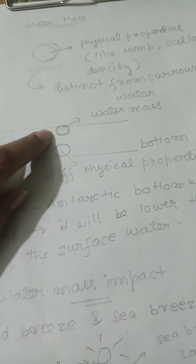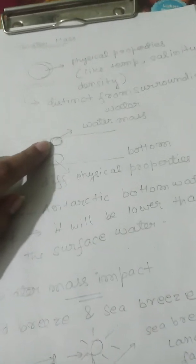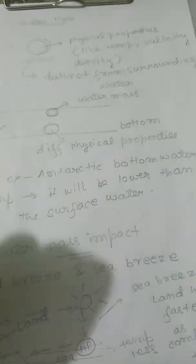And suppose we are considering here the surface of water—the water mass has different physical properties, different temperature, salinity, and density.